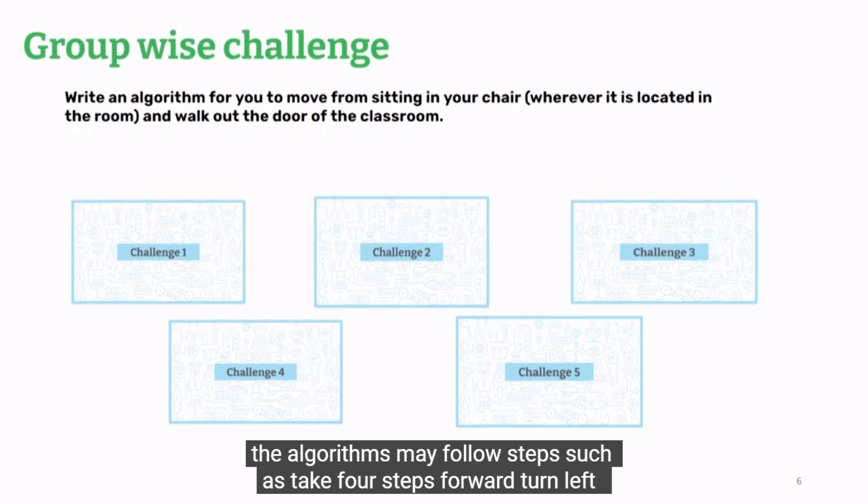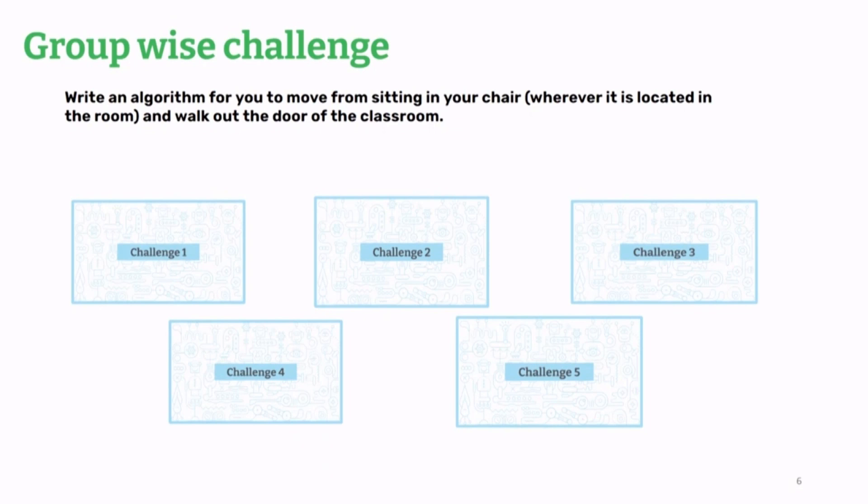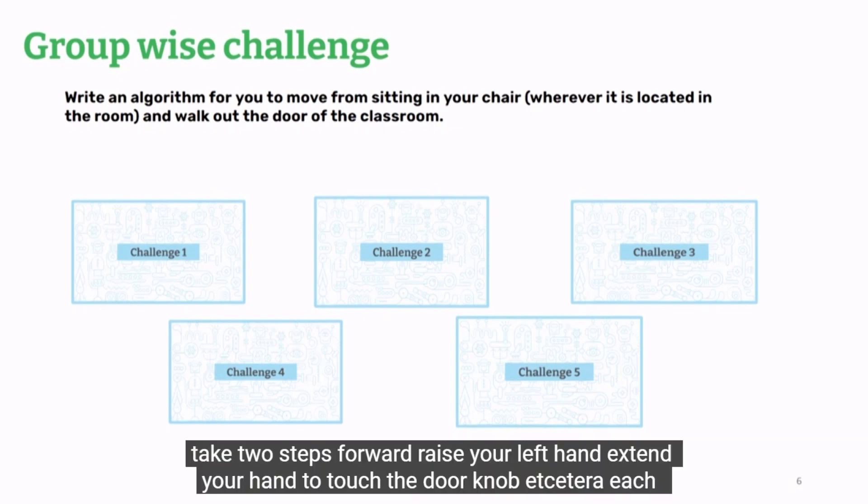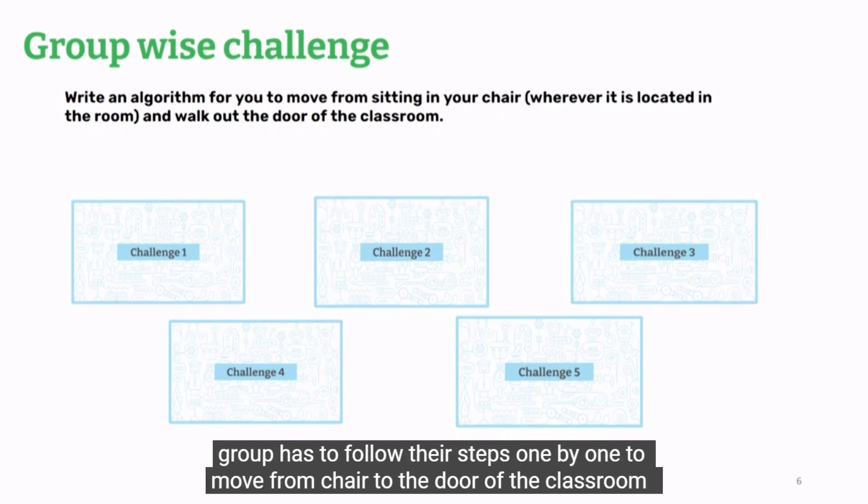The algorithms may follow steps such as take four steps forward, turn left, take two steps forward, raise your left hand, extend your hand to touch the door knob, etc. Each group has to follow their steps one by one to move from chair to the door of the classroom.